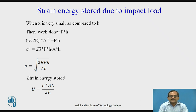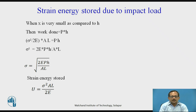When the extension x is very small compared to height h, then work done will be P×h. As we know, work done equals strain energy stored. So σ²/(2E) × A×l = P×h, and therefore σ² = 2×E×P×h / (A×l). Hence sigma = √(2×E×P×h / (A×l)), and the strain energy stored equals σ²/(2E) × A×l. By determining the stress induced due to the impact load, you can calculate the strain energy stored in the body due to the impact load.